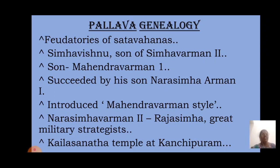His son Narasimhavarman I, who ruled from 630 to 668 AD, avenged the defeat by capturing Vatapi, the capital of the Chalukyas. He set Vatapi on fire and killed Pulakesin II in the process.